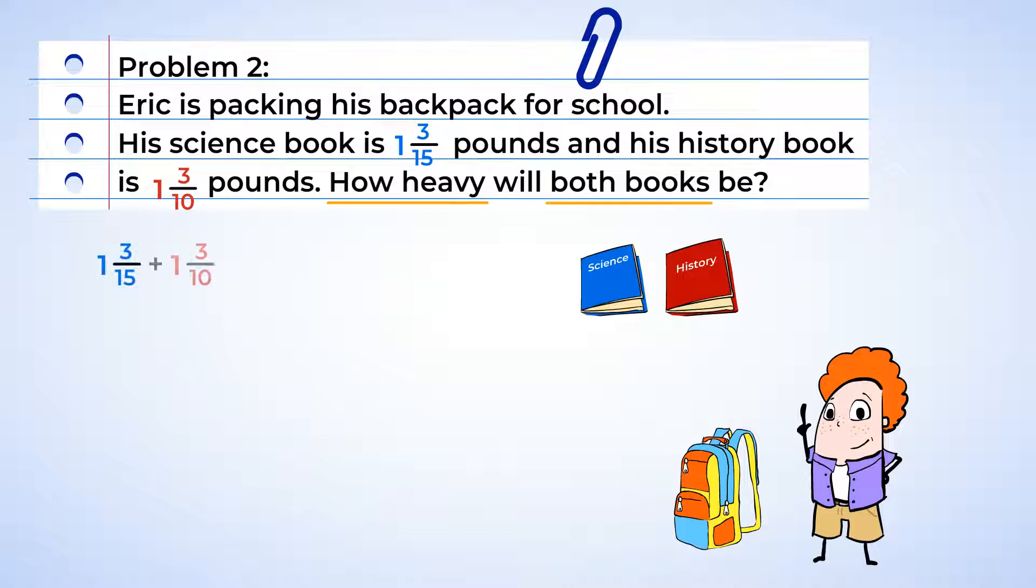Well, if we use the denominators to find equivalent fractions, we're going to be working with some very large numbers. Wait, take a look at 3/15. We can simplify this fraction. We can divide the denominator and numerator by 3 to get 1/5. That's much better.